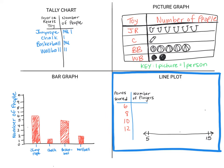Remember that a line plot involves a number line. Number lines can start at zero or we can take a chunk of it. In this case, we're going to look at the numbers between five and fifteen, because six is right after five and fifteen is close to twelve. I'll use the same strategy as the bar graph and cut it in half — halfway between five and fifteen is ten — then fill in six, seven, eight, nine, ten, eleven, twelve, thirteen, fourteen, fifteen. Let's say six people scored six points, three people scored eight points, five people scored ten points, and one person scored twelve points.